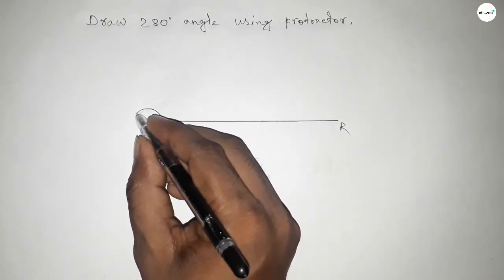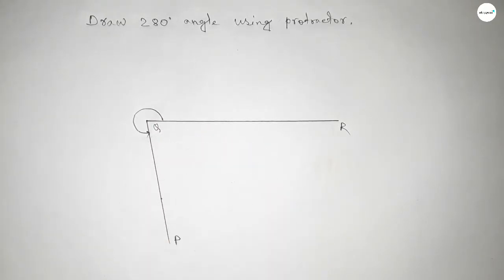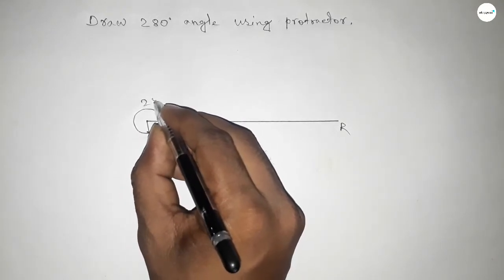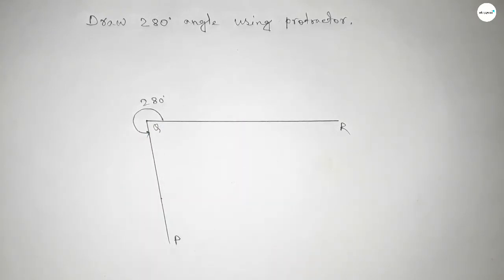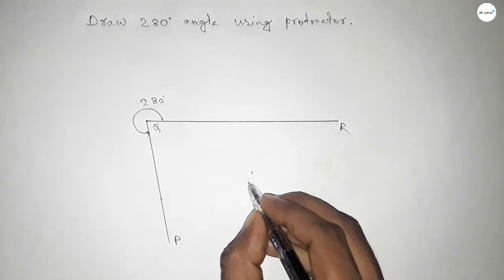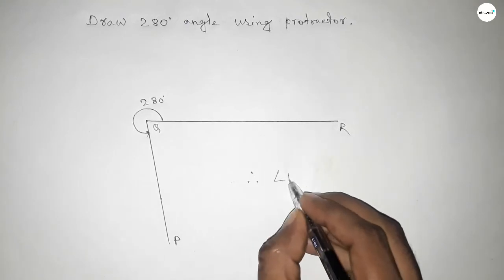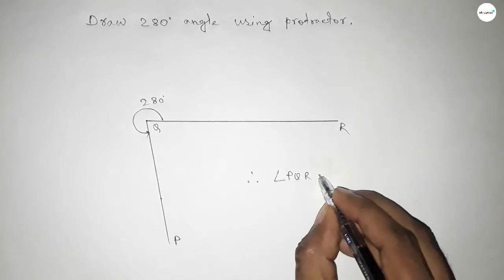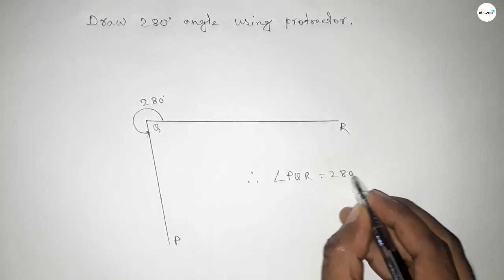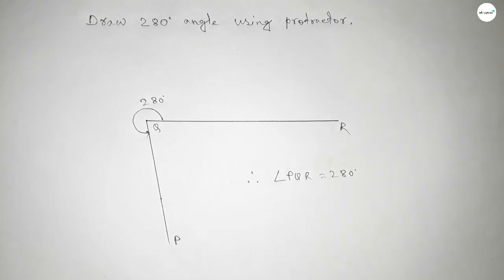This is a 280 degree angle. Therefore, angle PQR equals 280 degrees. That's all.